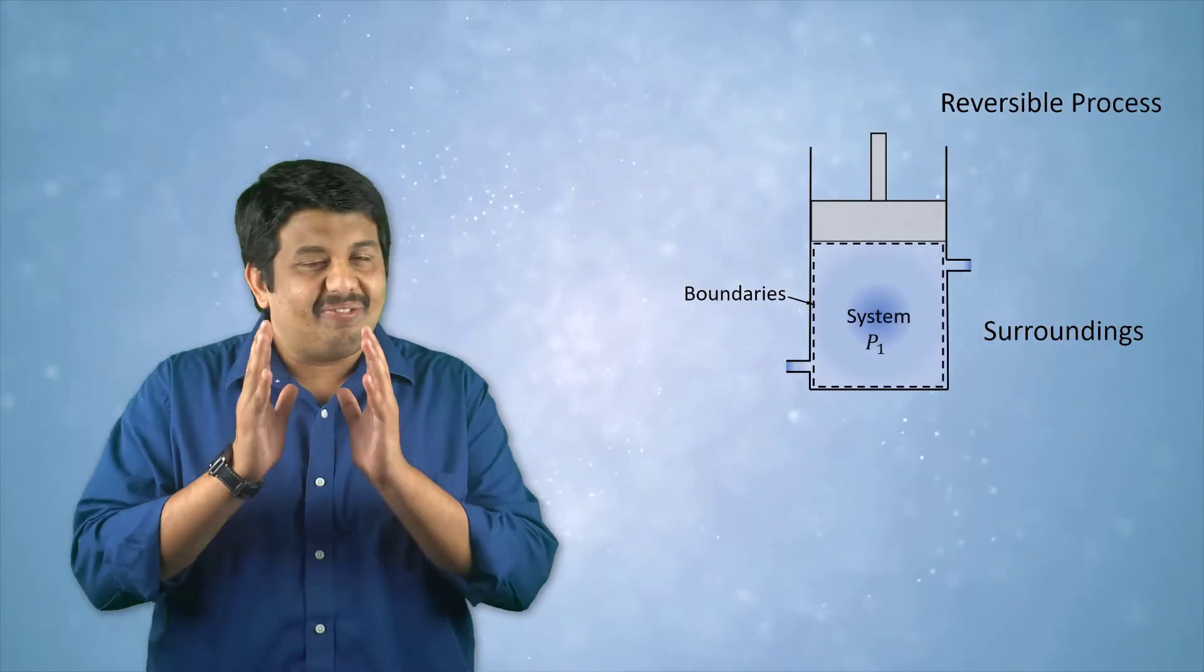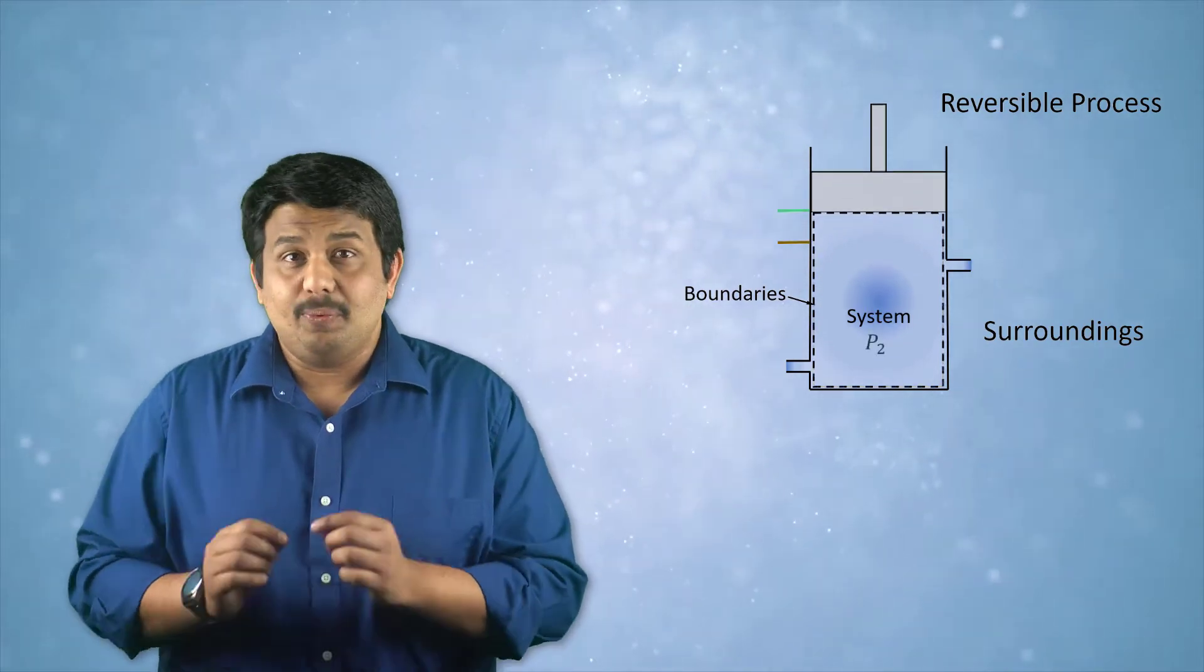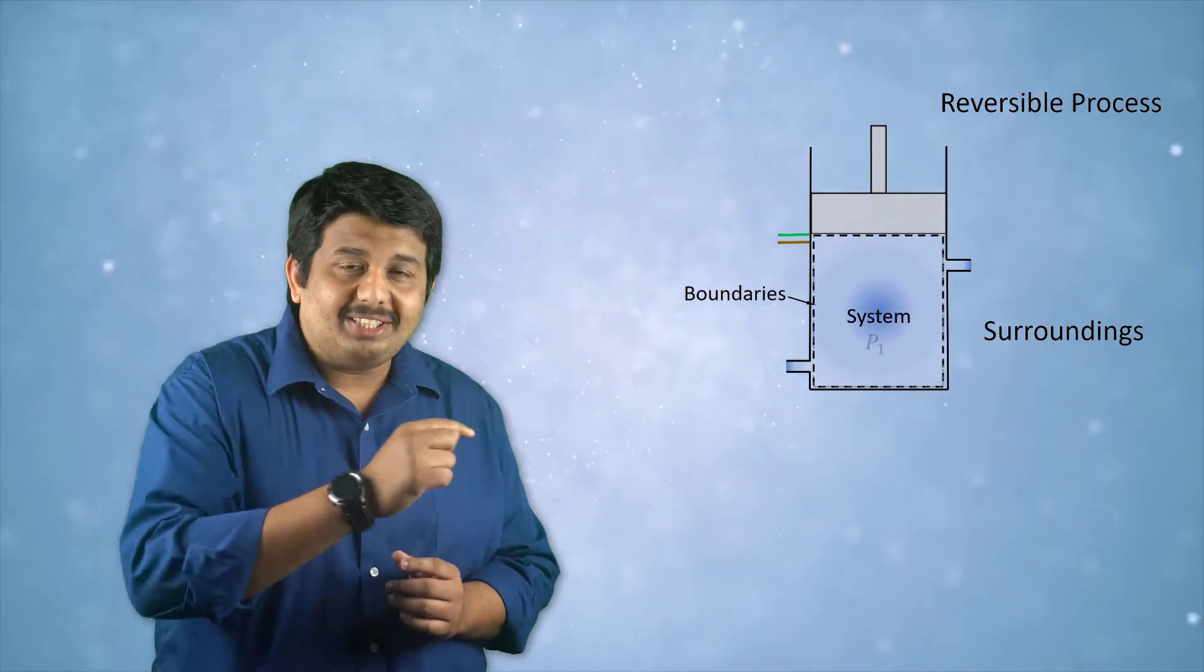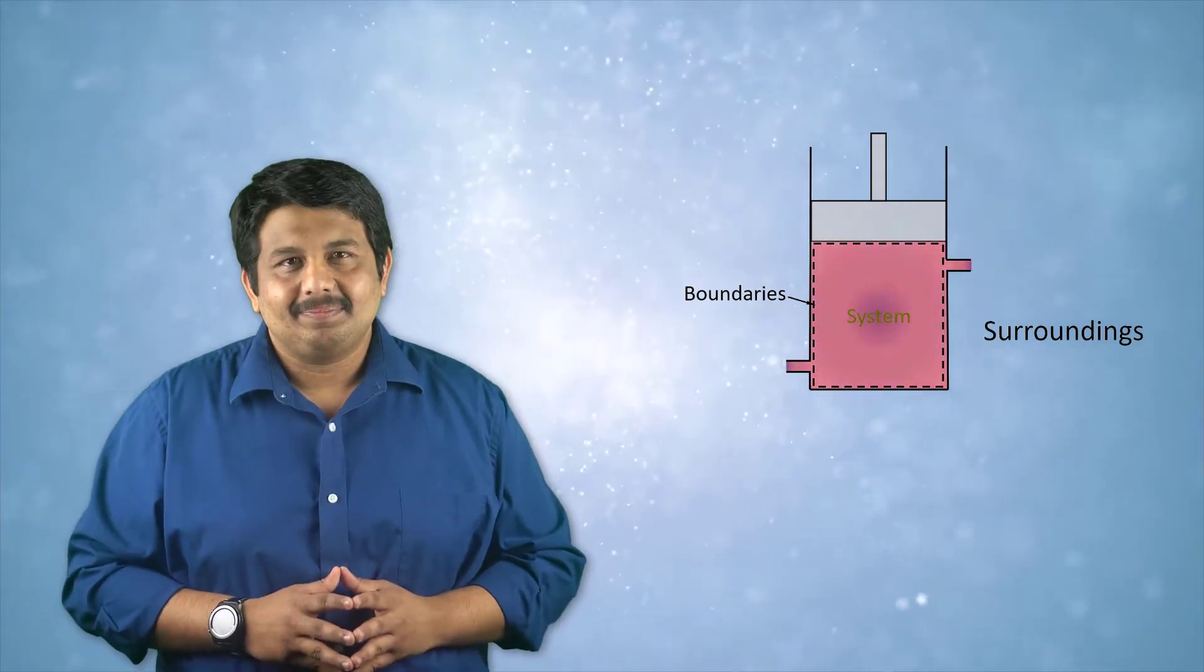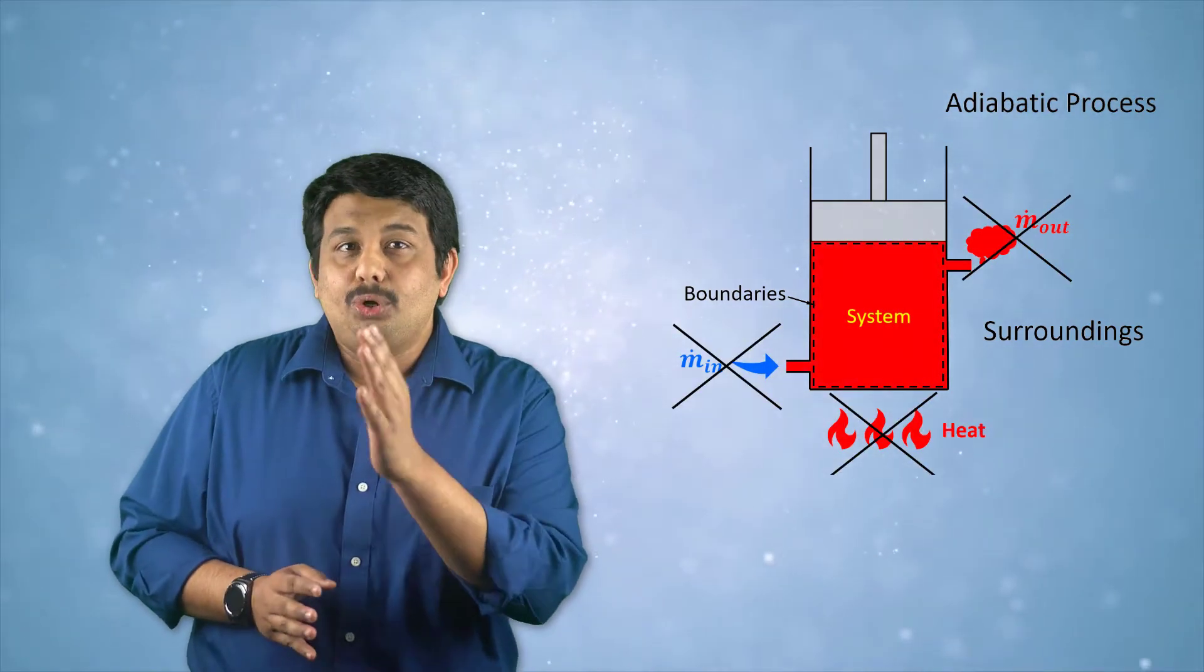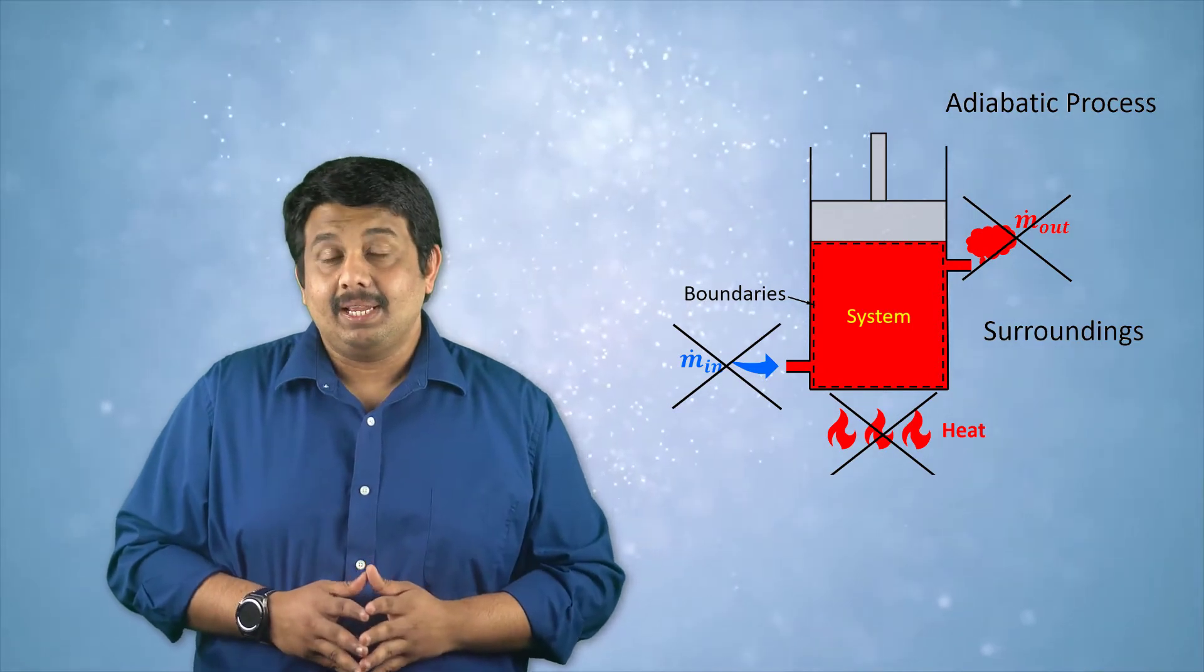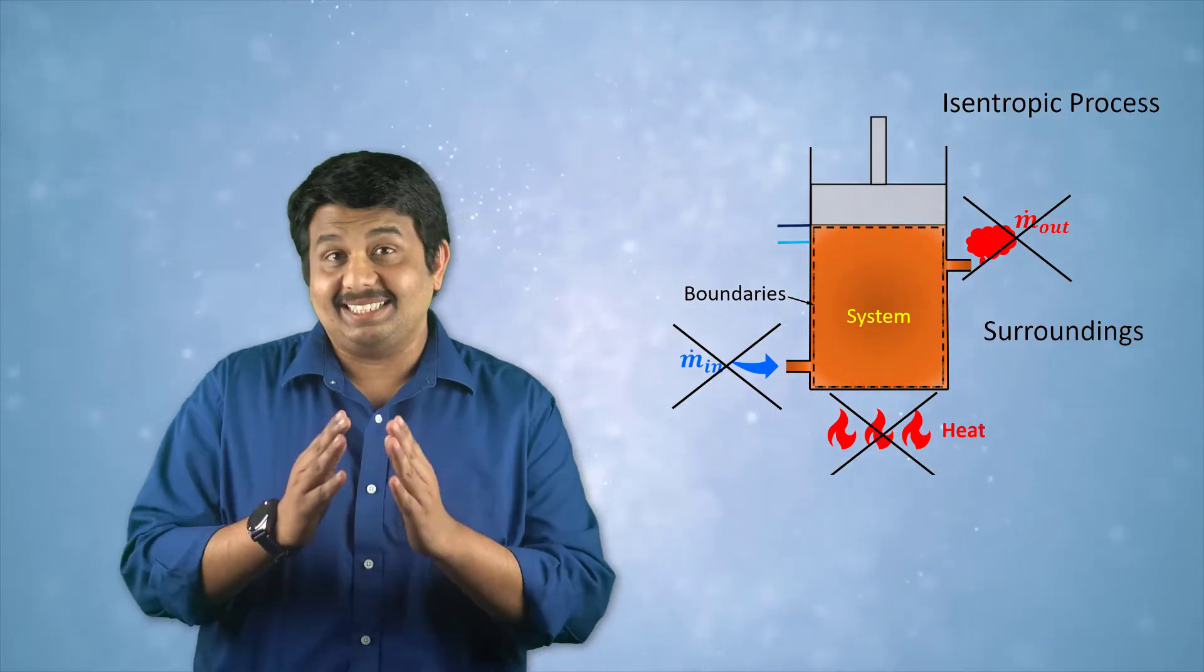Unlike the internal energy, heat and work are not variables of state. They depend on the process used for changing the thermodynamic state. A process can be of different types. For example, a reversible process is one where the system can be returned to its original state by backtracking a process that led to the change of state. An adiabatic process is where no heat and mass transfer are allowed to and from the system. A process that is both reversible and adiabatic can be called an isentropic process.